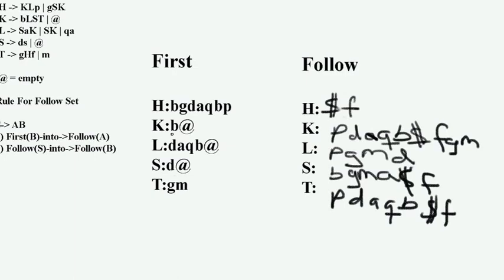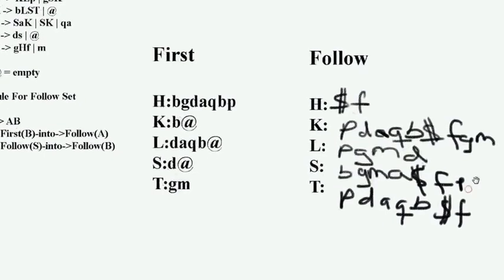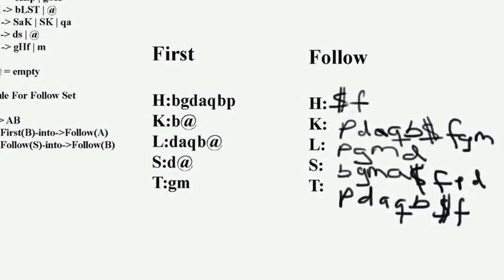Now does K go away? K does contain empty, so FOLLOW(l) also goes into FOLLOW(s). We have g, m — those are present. We don't have p or d yet, so we add p and d to FOLLOW(s). Then FOLLOW(l) goes into FOLLOW(k) again, which is redundant since we already have that. Nothing else to do.